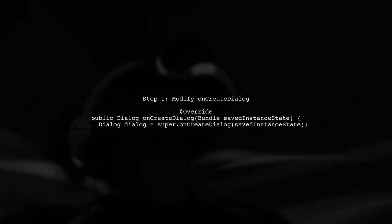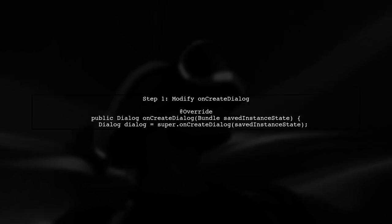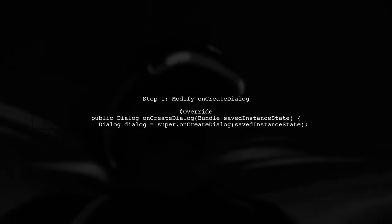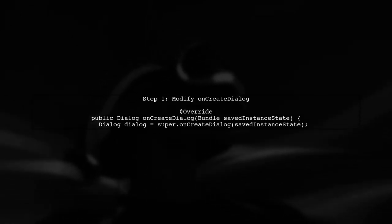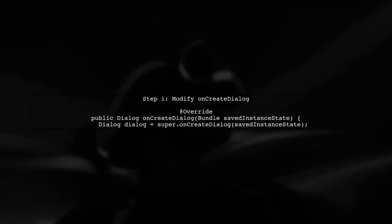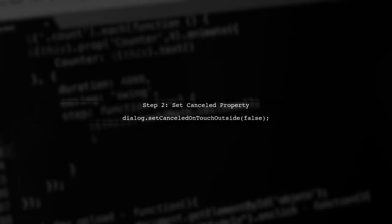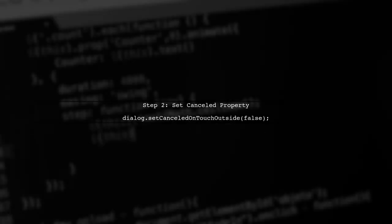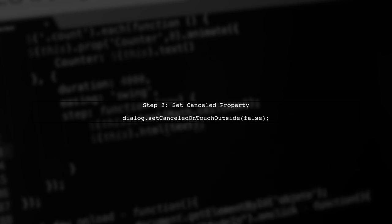To disable clicks outside of a dialogue fragment in Android, we need to modify the dialogue's properties. First, let's look at the onCreateDialogue method. In the onCreateDialogue method, we will set the property setCancelledOnTouchOutside to false. This will prevent the dialogue from being dismissed when the user touches outside of it.